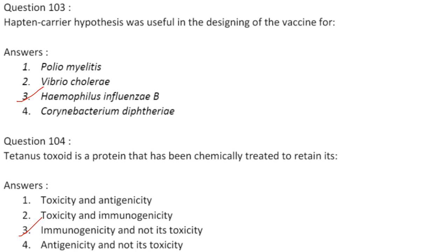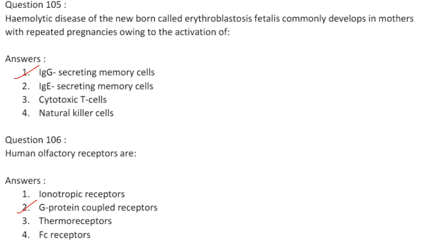Tetanus toxoid is a protein that has been chemically treated to retain its immunogenicity but not its toxicity. A toxoid is a bacterial toxin that is no longer active but retains immunogenic properties. Answer is option 4. Hemolytic disease of the newborn, erythroblastosis fetalis, commonly develops in mothers with repeated pregnancies owing to the activation of IgG-secreting memory cells. Answer 5.